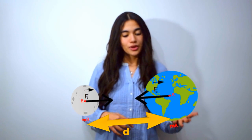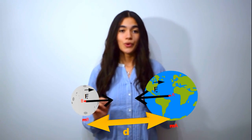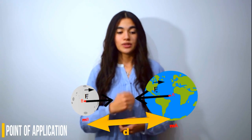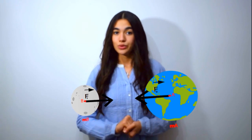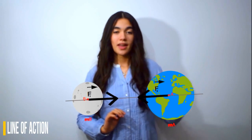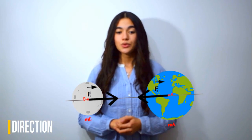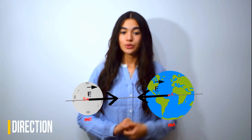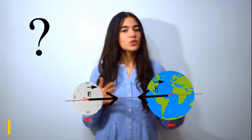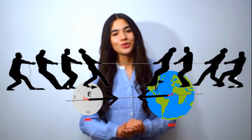The force F1 is the force applied by the Earth on the moon, and F2 the force applied by the moon on the Earth. The point of application is B for force F1, and A for force F2. The line of action is the one passing through A and B. The direction of force F1 is toward the Earth, and of force F2 is toward the moon — simply because it's an attractive force, like if the Earth and the moon were playing tug of war.